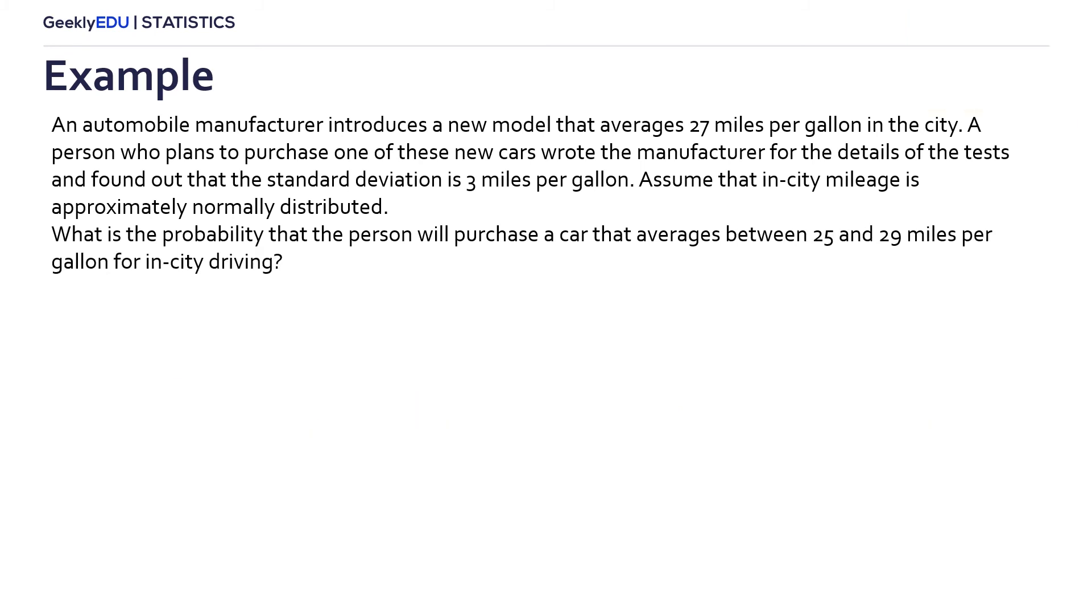Fortunately, he or she is getting realistic. Using the same information, what is the probability that the person will purchase a car that averages between 25 and 29 miles per gallon? Now, we have two different x-scores. Using the formula and substituting for these two x-values, we obtain that when the x-score is equal to 25, z-score is minus 0.67, and when x-score is 29, the z-score is 0.67.